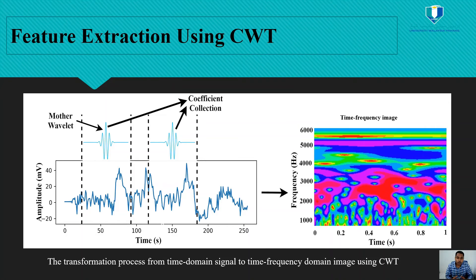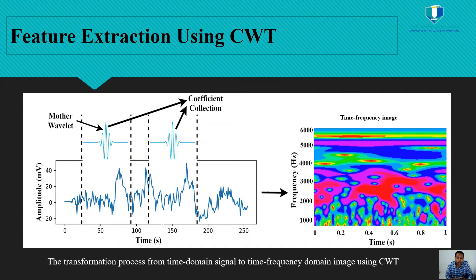This figure shows the transformation process from a time-domain signal to a time-frequency domain image using CWT. In this study, we have used the mother wavelet, which has two properties: the scaling property and the shifting property. Based on these properties, we collect the coefficients to build the time-frequency image.